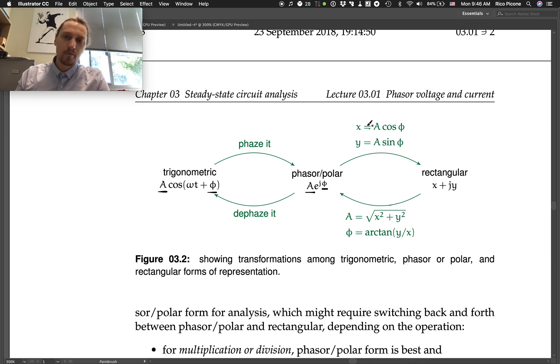That is, the x or real part is the amplitude A times cosine phi, the angle. And y, or the imaginary part, is A sine phi. And you get x plus jy in the rectangular form.